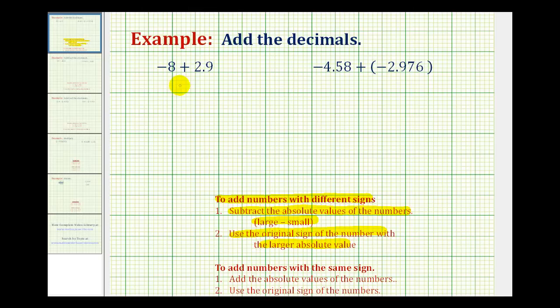So again, going back to this example, the absolute value of negative eight is positive eight. And the absolute value of positive 2.9 is positive 2.9. But now because the original numbers have different signs, we're going to subtract. We'll subtract the smaller from the larger.